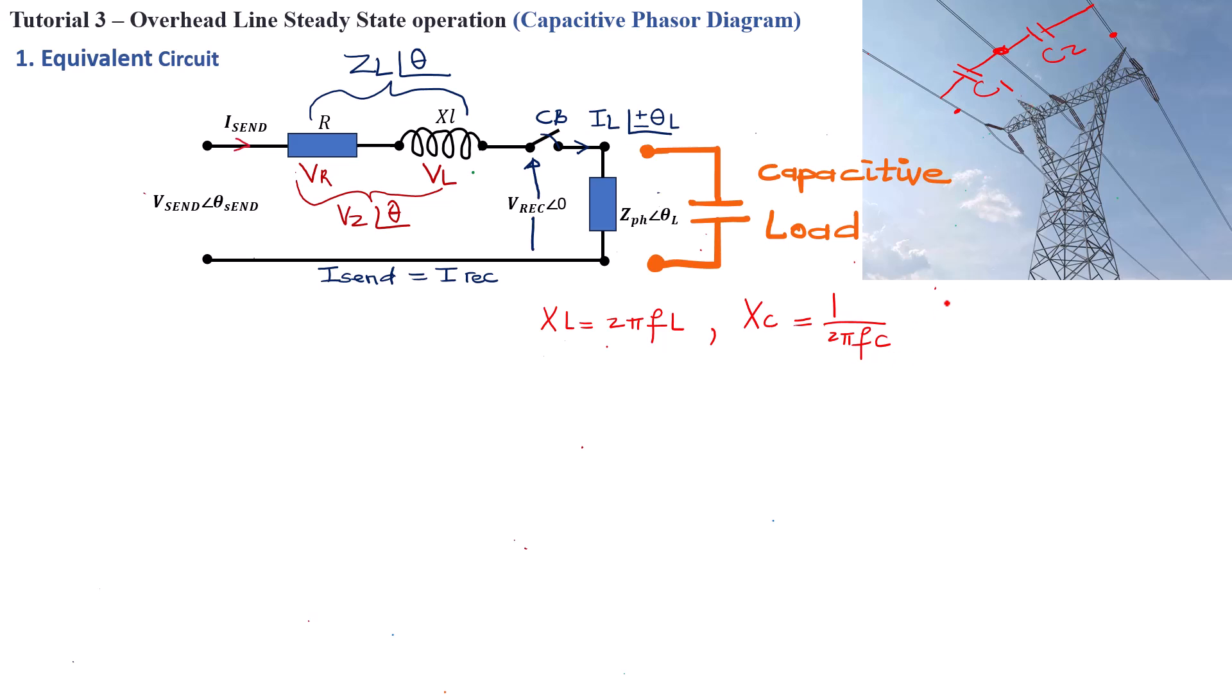But in a low frequency system like this transmission line, the capacitive reactance is going to be high. And based on this, there will be some current flow to try to charge this capacitor.